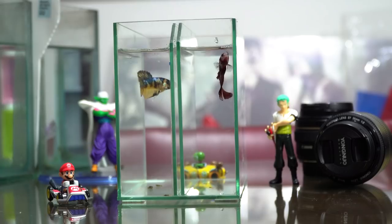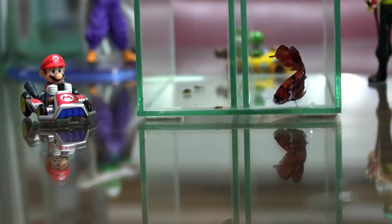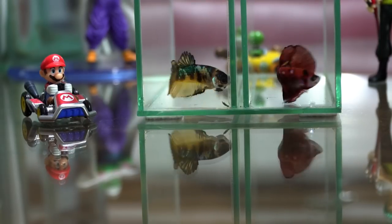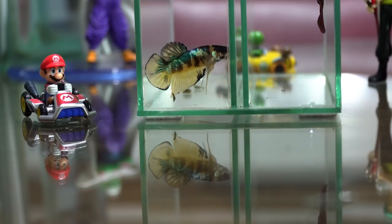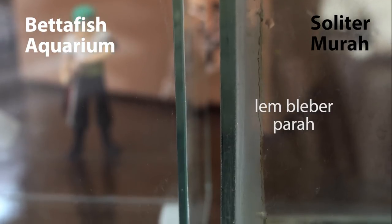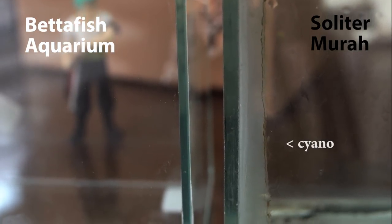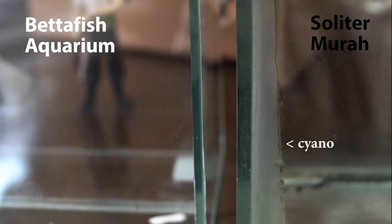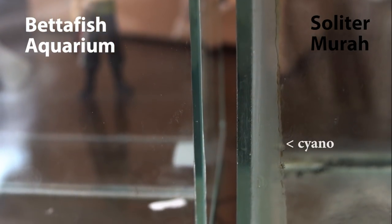Nah, bagi beberapa orang, lem bleber itu mungkin nggak penting ya, tapi bagi gue itu penting. Selain buat estetika, lem bleber itu nanti masa depannya akan bikin kita susah. Karena di situ lebih sering tumbuh cyanobacteria, yang coklat itu loh teman-teman. Lalu tumbuh lumut, itu susah banget bersihnya. Jadi bagi gue, si lem yang rapi seperti ini sangat penting.